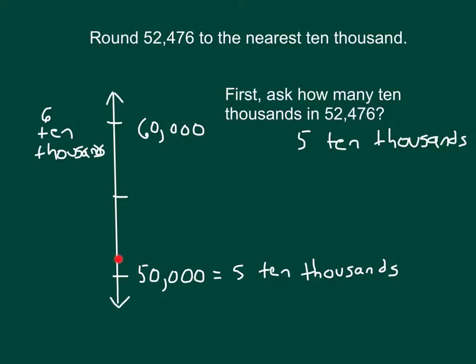If we were to count by a thousand, it would be 51,000, 52,000, 53,000, 54,000, 55,000. So that is 55,000.